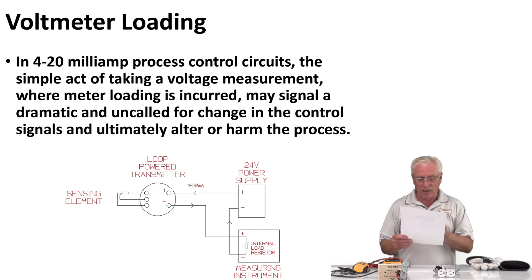On this slide, I wanted to talk about 4 to 20 milliamp process control circuits. The simple act of taking a voltage measurement where meter loading is incurred may signal a dramatic and uncalled for change in the control signals and ultimately alter or harm the process. I have an example of that. When I was instructing a class, we were trying to set up a lab for apprentices. We had a proximity sensor and a plate, and we wanted to make it so that as the plate moved closer, a light that was controlled by it got brighter and brighter. As we withdrew it, it dimmed.